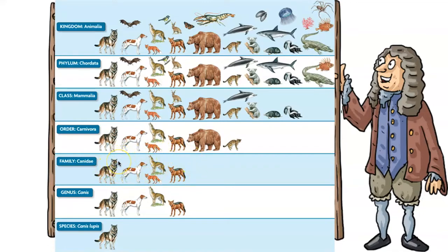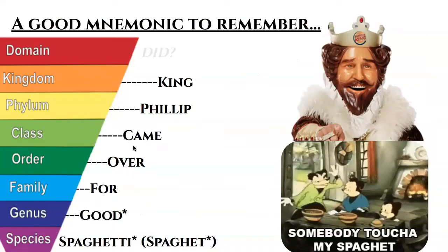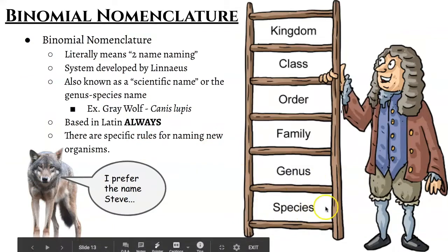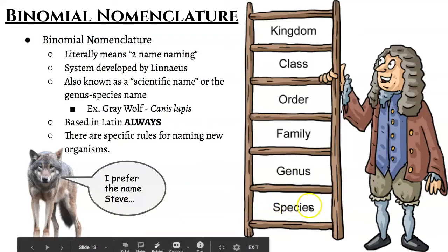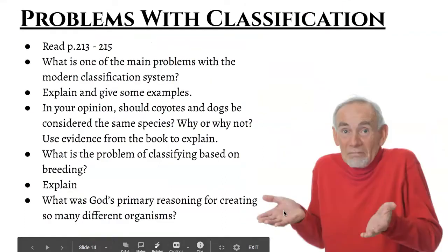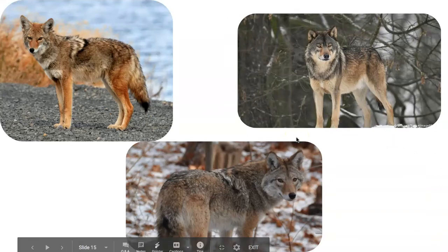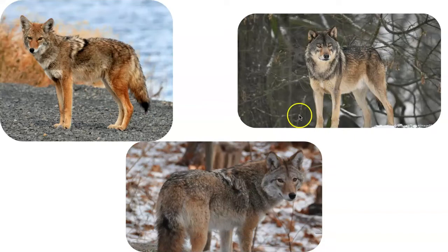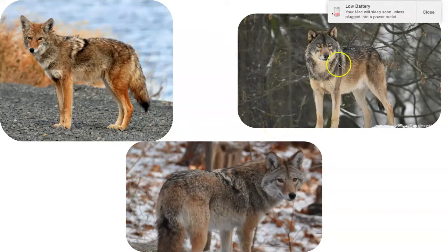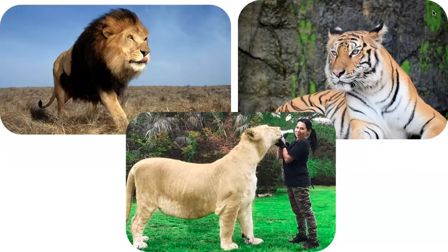In a nutshell: the species level is the most specific, but the problem with species is that it doesn't always line up perfectly with the classification or definition we've given it. That's because organisms can sometimes produce hybrids, which probably shouldn't be happening under a strict definition. But if we look at them all as being from the same biblical kind — where they can reproduce with each other — then that tells a different story.